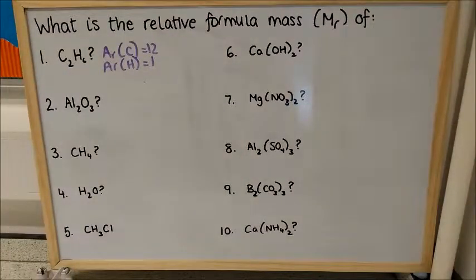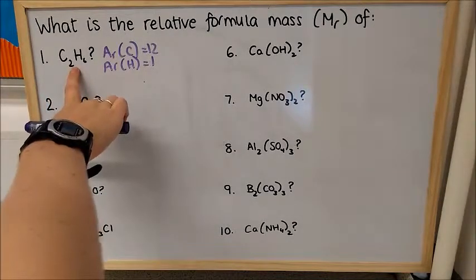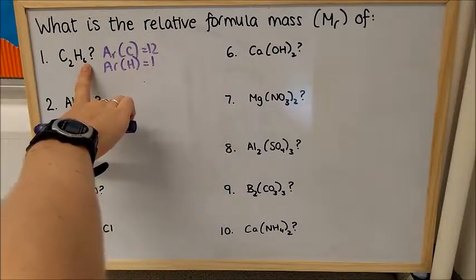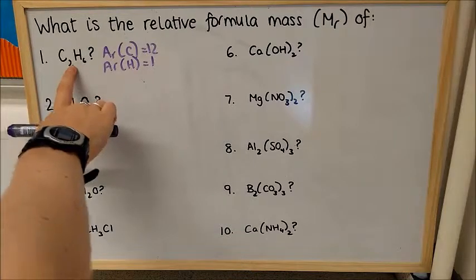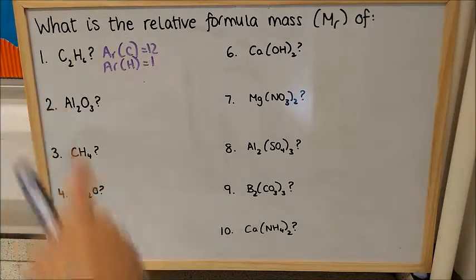Now I can see from the formula that there are 2 atoms of carbon, and there are 6 atoms of hydrogen. So I need to count carbon twice, and I need to count hydrogen 6 times.